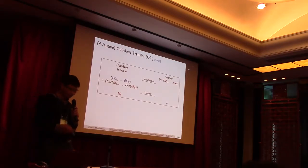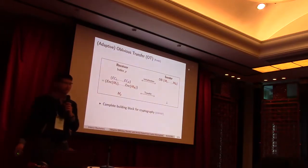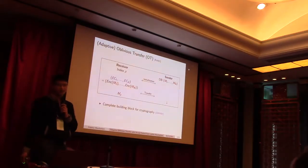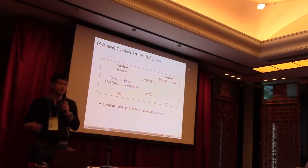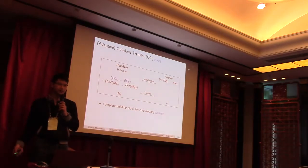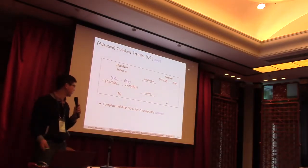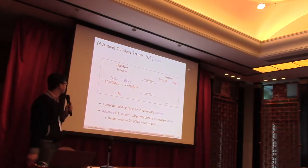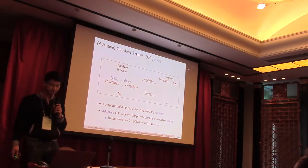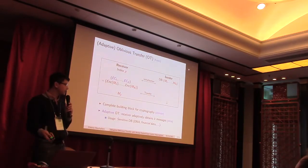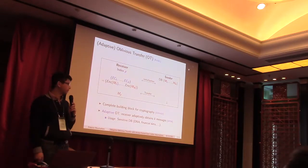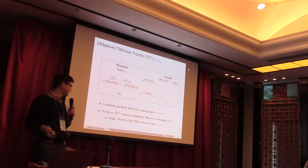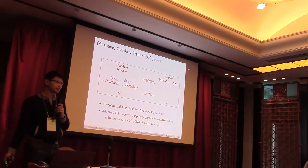After the transfer phase, it should obtain the message it wants. And the database holder, the sender, should not learn any information. So it's interesting to work on because, first of all, it's what we call the complete building block for cryptography. Meaning that if we manage to provide efficient oblivious transfer, we also obtain secure multiparty computation for any functions. And also, the adaptive settings, where queries may depend on previous queries, is useful for sensitive databases like DNA storage data.